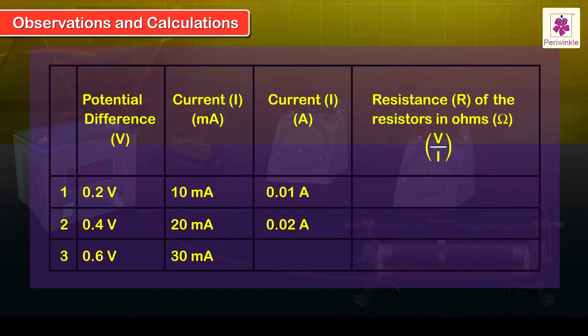For potential difference 0.6V, a current of 30 mA, i.e. 0.03 A, flows through the circuit.